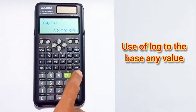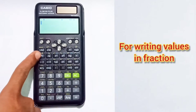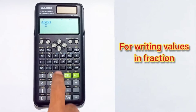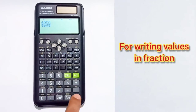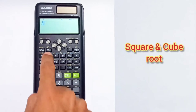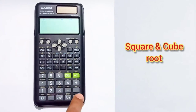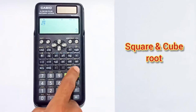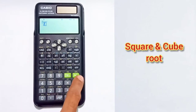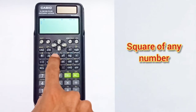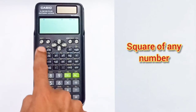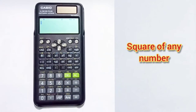For writing values as fractions, press the fraction button — you will see two boxes on the left side of the screen. The next button finds the square root, and using Shift plus that button calculates the cube root. To find the square of a number press x², and for the cube press Shift plus that same button.